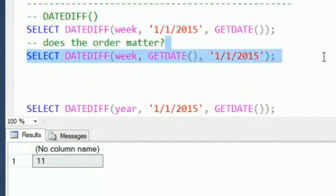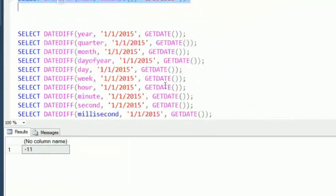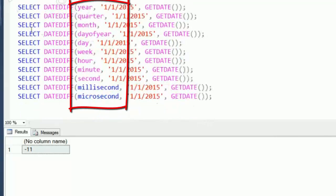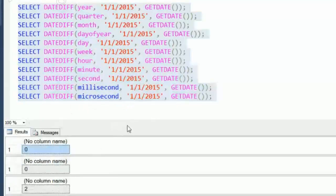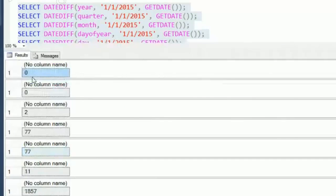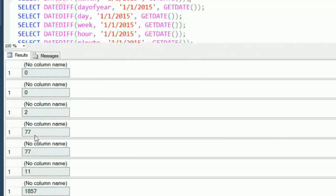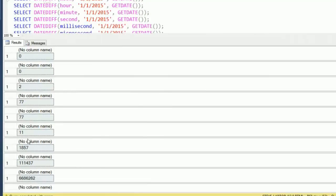What I've done is I've taken January 1st versus the current date and I've passed in all the different parameters here that are available. We can get our results back and see that for year and quarter, January 1st is in the same year and quarter that today is, so those show up as zero. For month, we're getting two months apart. Days, day of year, and day - we're getting the same number there. And then you can see the calculations all the way down.